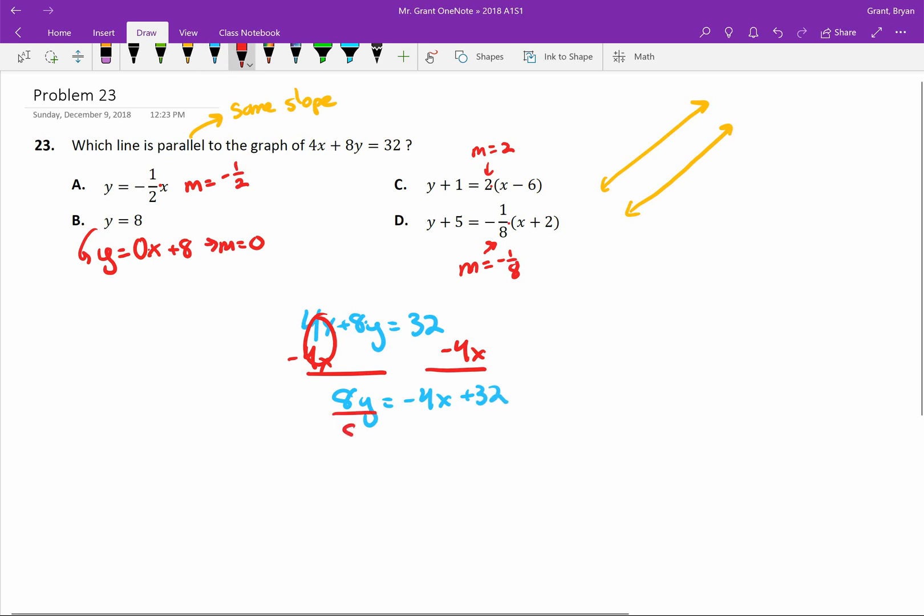And then last but not least, we divide off the 8 that's still attached to y. And don't forget when you multiply or divide to a side you need to do that division to every term on that side. So I need to do negative 4 divided by 8 and I need to do 32 divided by 8.